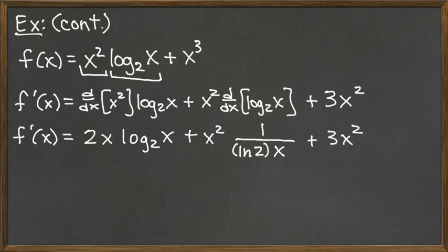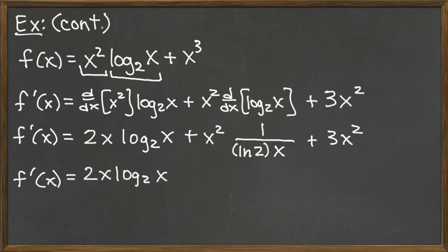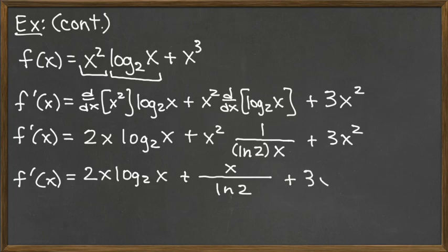To clean up the result, the first term 2x log base 2 of x is already simplified. However, in the second term we have x squared times 1 over (x times natural log of 2), and since x appears in both the numerator and denominator, one factor of x cancels, leaving just x over natural log of 2. So the final derivative is 2x log base 2 of x plus x over natural log of 2 plus 3x squared.